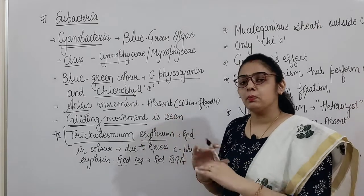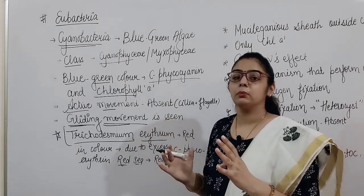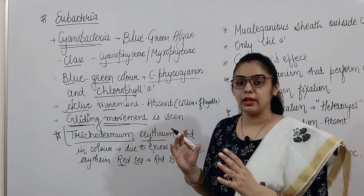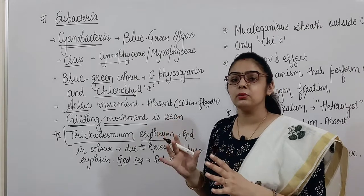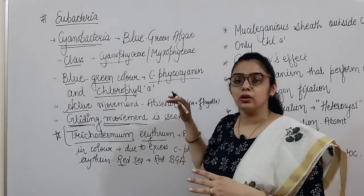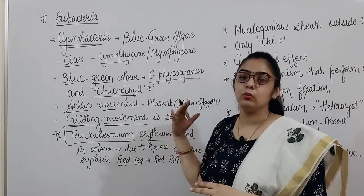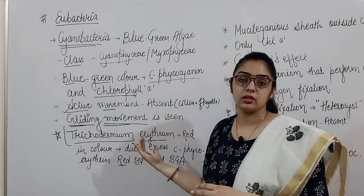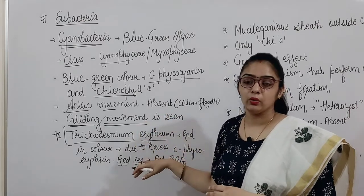When Trichodesmium is present in excess amount and shows multiplication, the sea appears red in color. So the question — why is the Red Sea red? — it comes due to this Trichodesmium erythraeum.